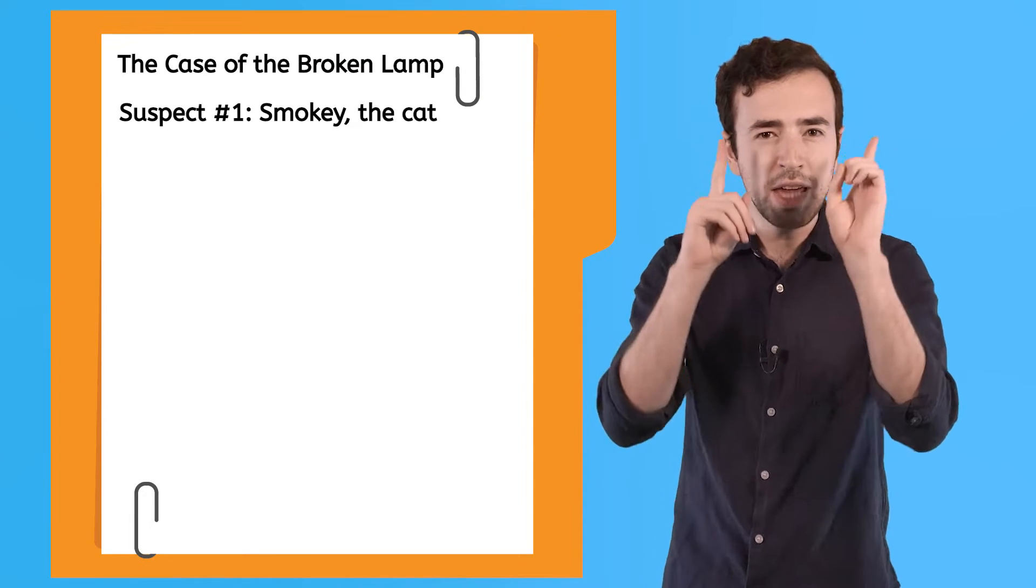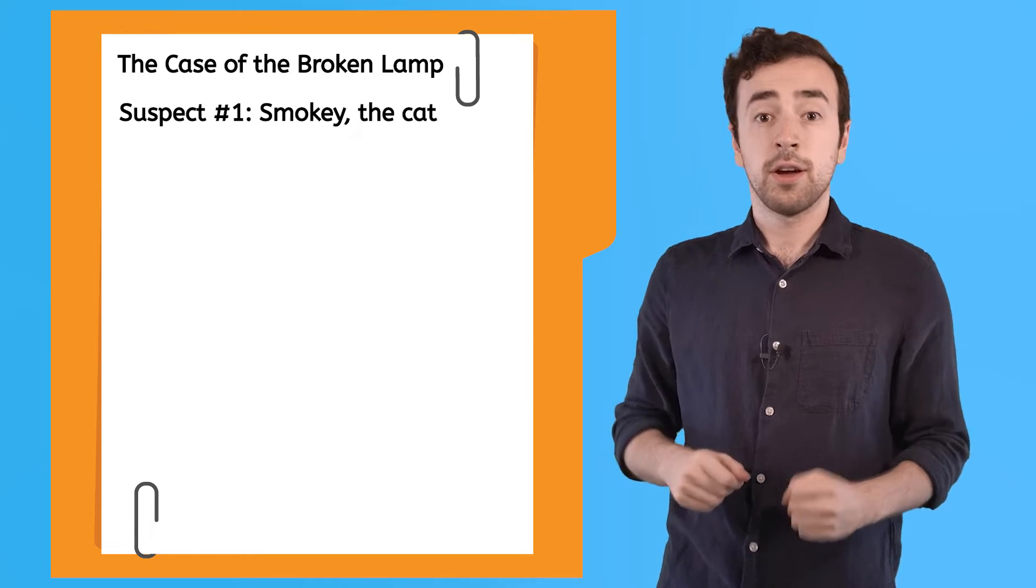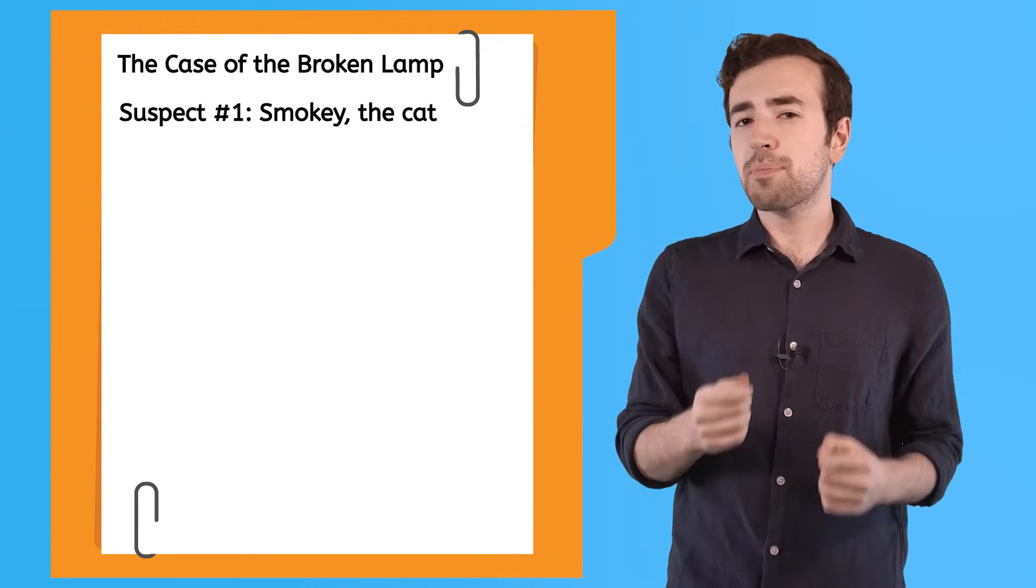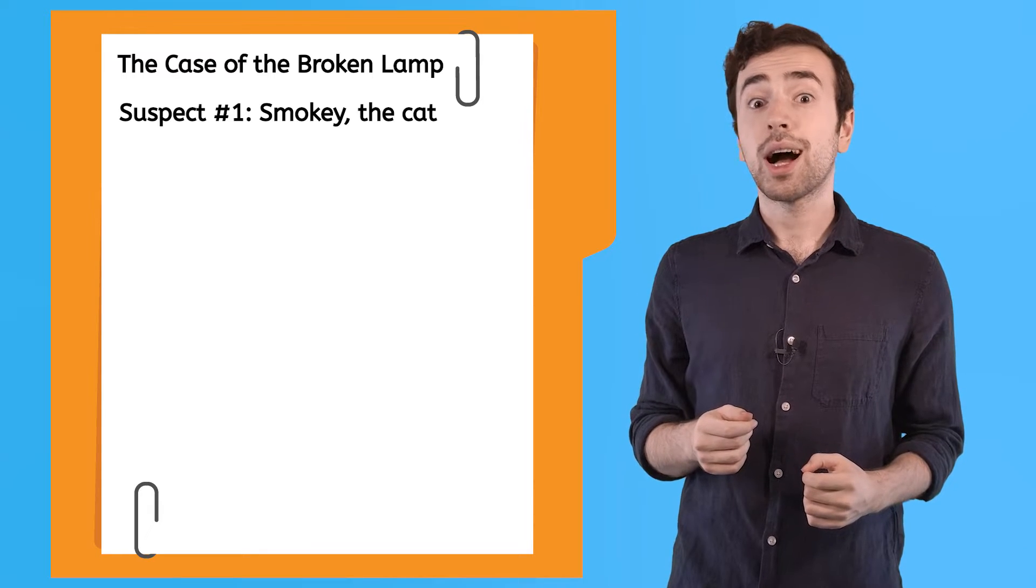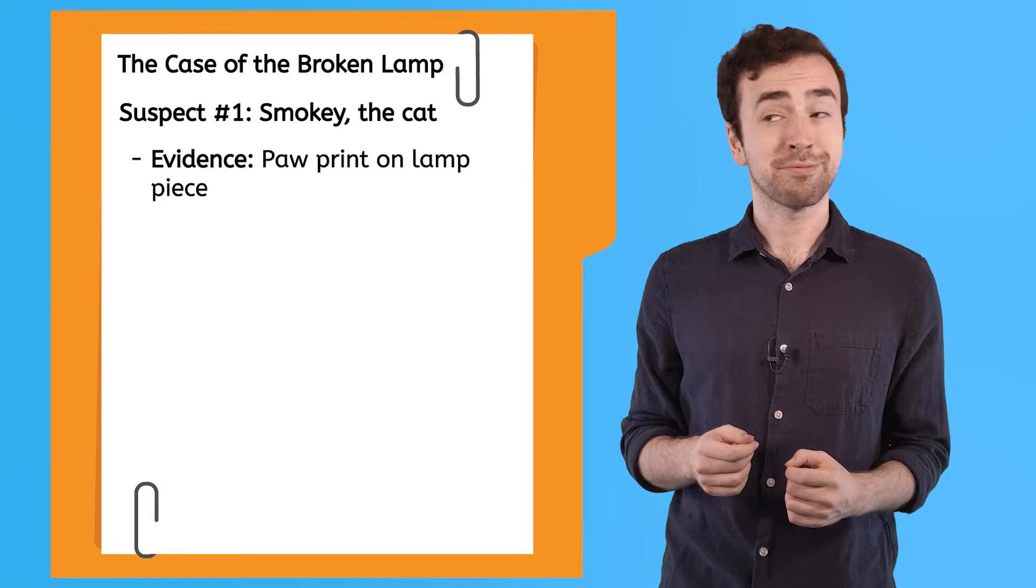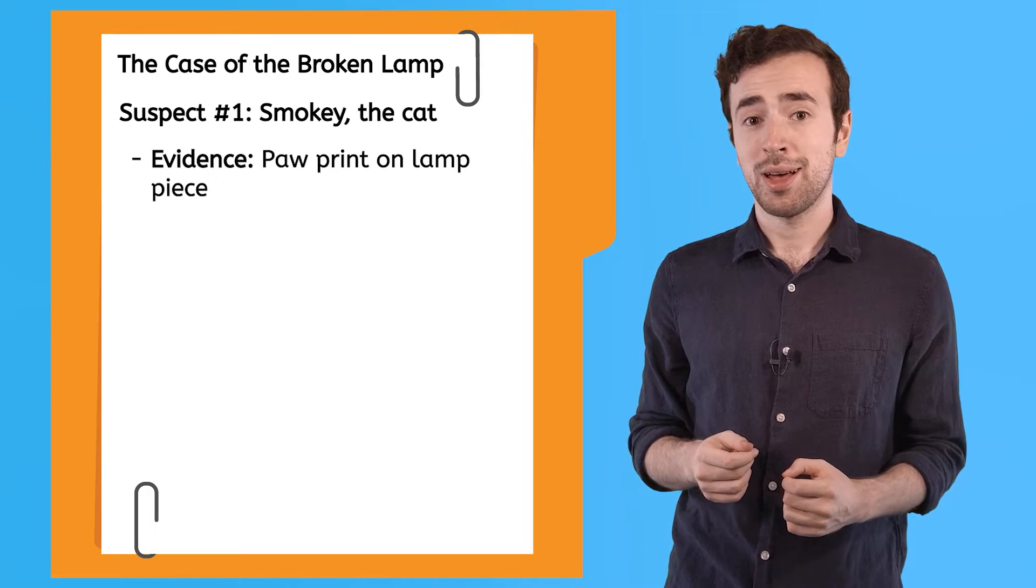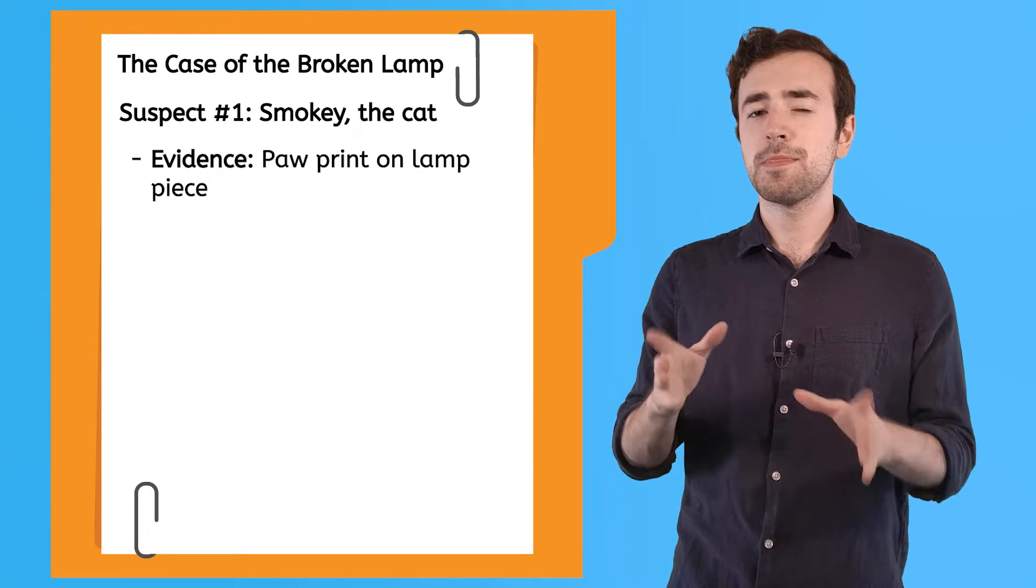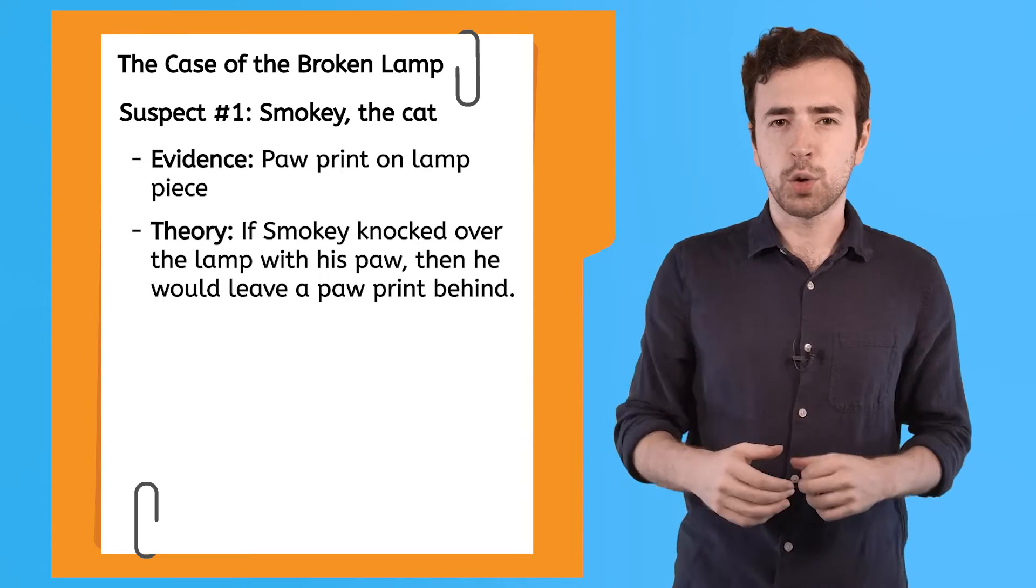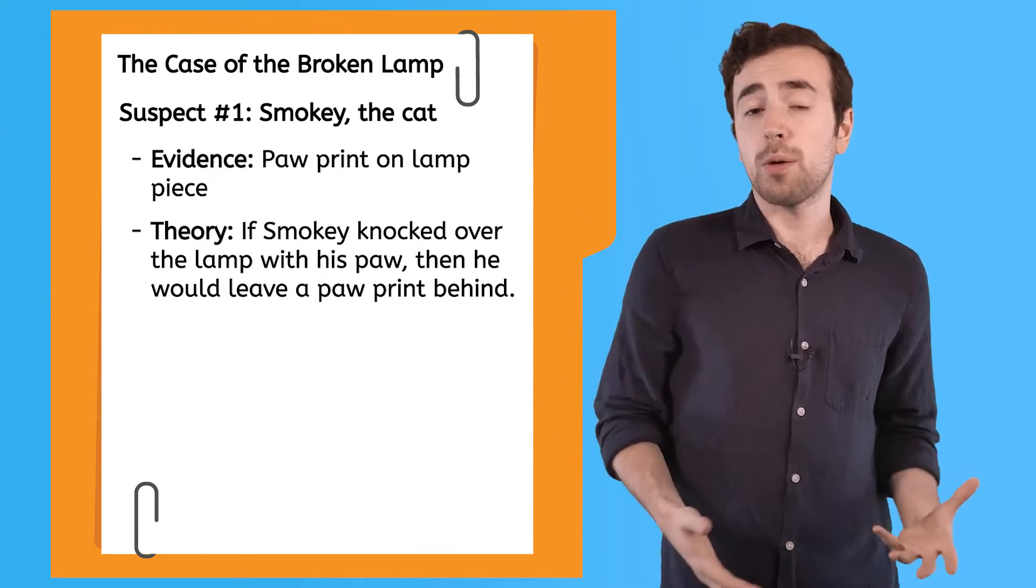Okay, let me give you the evidence I've found. First, on Smokey. On one of the lamp pieces on the floor, I found a paw print. It's not looking too good for Smokey. But think about it this way. I know that if Smokey had knocked over the lamp, there would be a paw print on it.